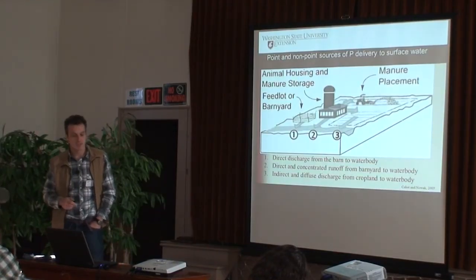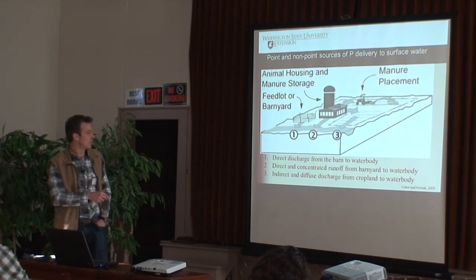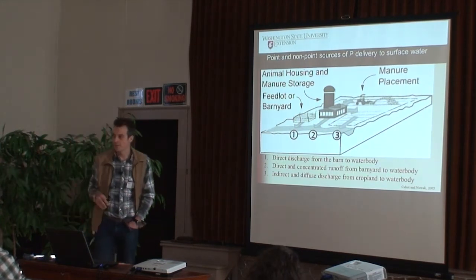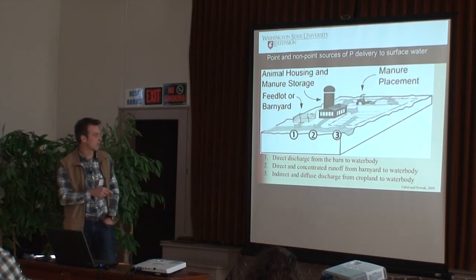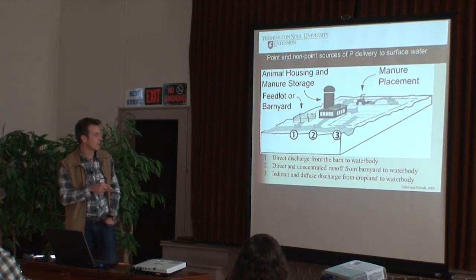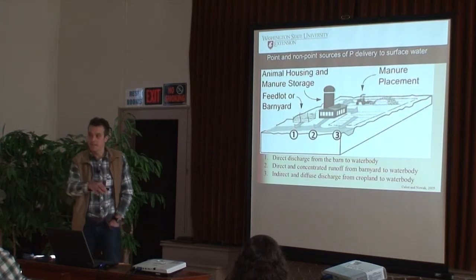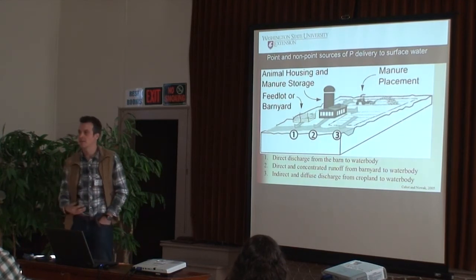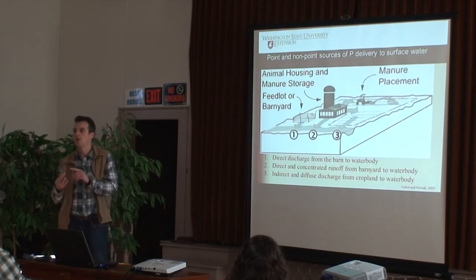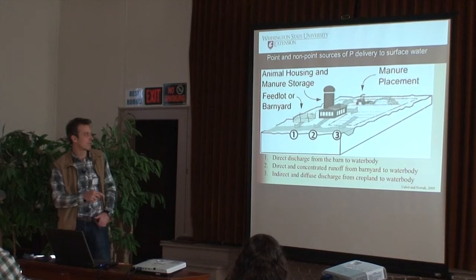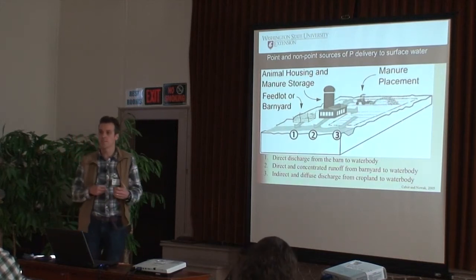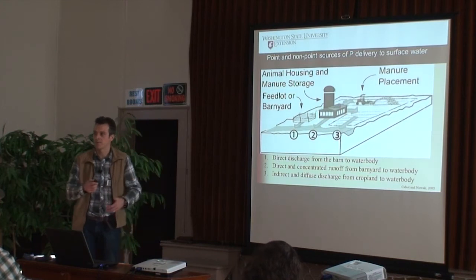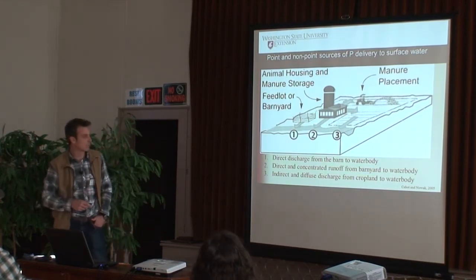Phosphorus can be lost through both point sources and nonpoint sources. Point sources are where you can visually see manure going into a waterway — those are easier to identify and address. Nonpoint sources are what all the soil testing addresses — how much did you apply? How much is in your soil? That's all designed to limit nonpoint source pollution, which is the loss of soil enriched with phosphorus, or loss of phosphorus through leaching, which can happen when phosphorus levels in the soil get very high.